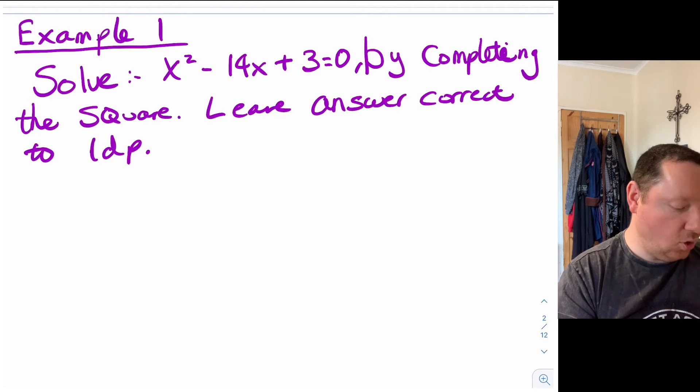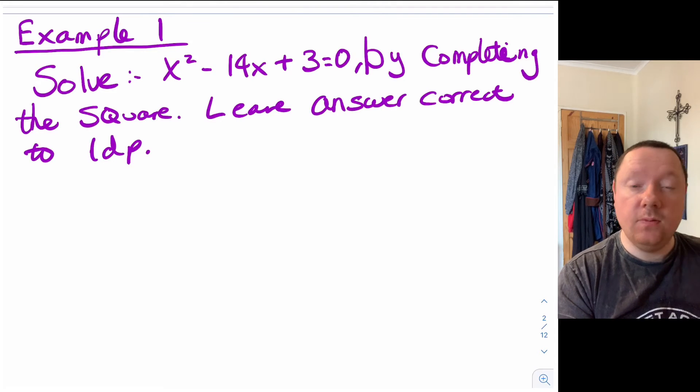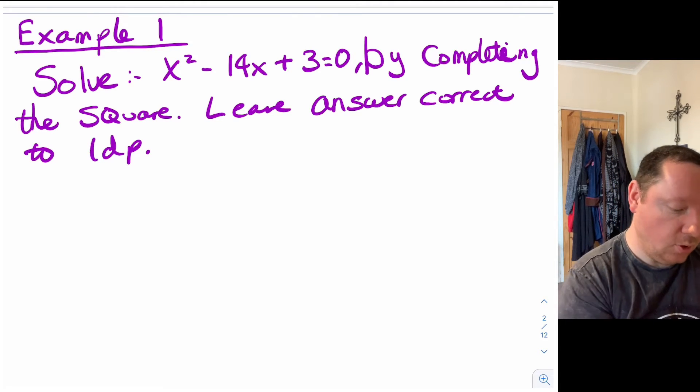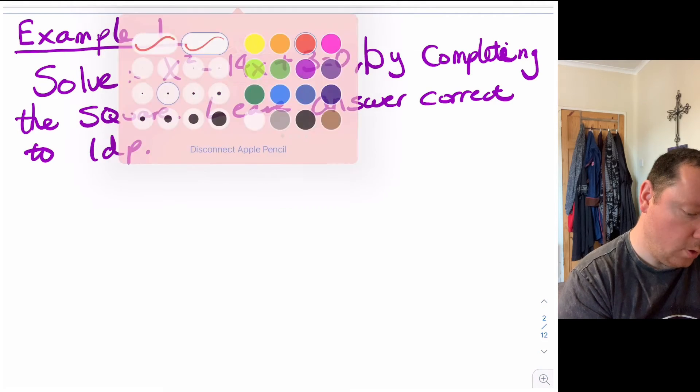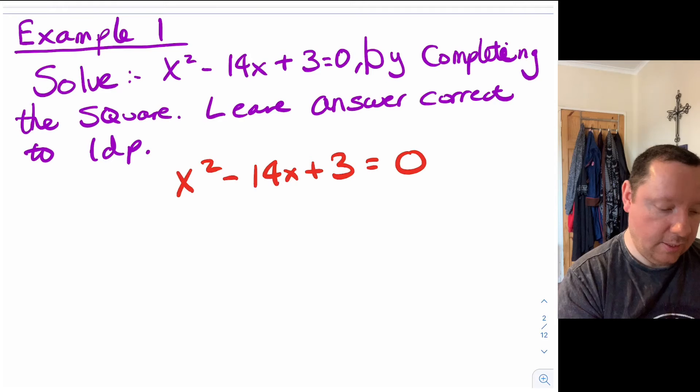Example one says solve x squared minus 14x add 3 equals 0 by completing the square. And it says leave your answer correct to one decimal place. Because usually when you square root a number you don't get a whole number answer. That's why it's telling you to leave your answer to one decimal place. So the steps are just the same as before. So we write our question down x squared minus 14x plus 3 equals 0 and we complete the square on the left hand side.